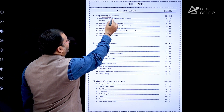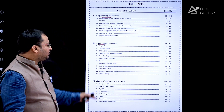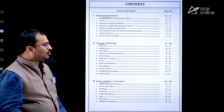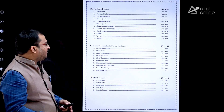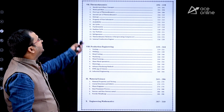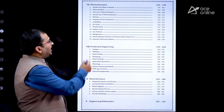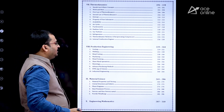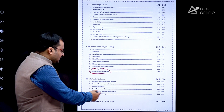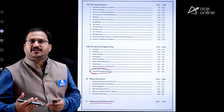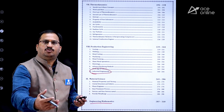In Engineering Mechanics there are 8 subtopics. Strength of Materials has 12 subtopics, Theory of Machines and Vibrations has 8 subtopics, Machine Design has 12 subtopics, Fluid Mechanics and Turbo Machinery has 10 subtopics, Heat Transfer has 5 subtopics, Thermodynamics or Thermal Engineering has 14 subtopics including Internal Combustion Engines and Refrigeration, Production Engineering has 10 subtopics including Industrial Engineering, Material Science has 6 subtopics, and Engineering Mathematics is also included. All previous year questions from 2006 to 2020 are explained in detail.